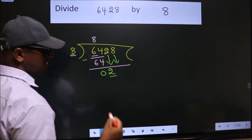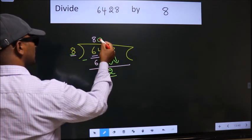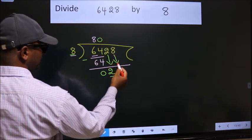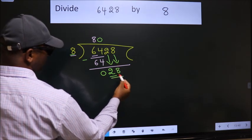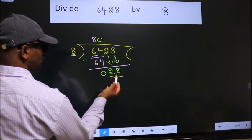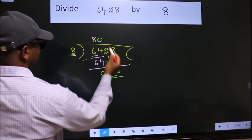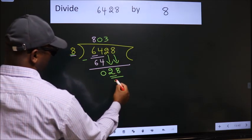The rule to bring down the second number is put zero here, then only we can bring down this number. So 28. A number close to 28 in the 8 table is 8 threes 24.